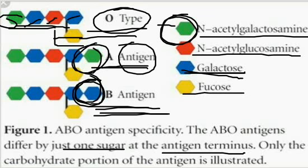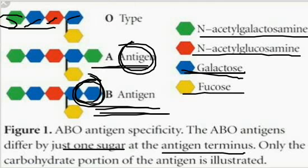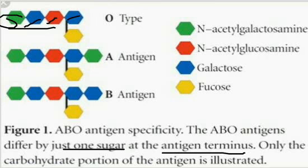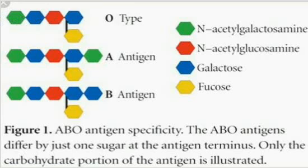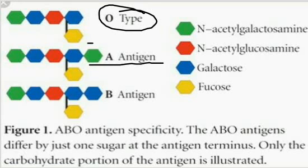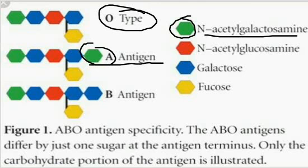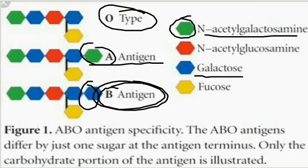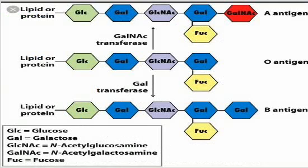O is the most basic and simplest blood group. After that, by utilizing different enzymes to add different sugars to the O blood group, you can get A — if you add the green subunit, N-acetylgalactosamine — or B, if you add the blue subunit, galactose. Let's talk about the process in detail.